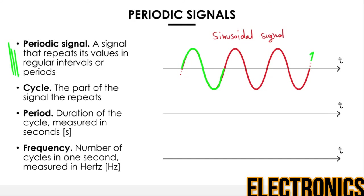The duration of one cycle is called the period, measured in seconds and indicated with capital T. One interesting parameter for periodic signals is the frequency, which indicates how many cycles are completed by the signal in one second. Mathematically, it is the inverse of the period, and it is measured in Hertz. So frequency F equals 1/T.